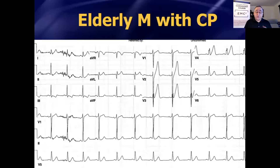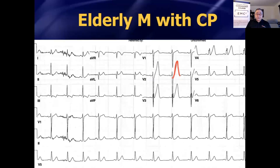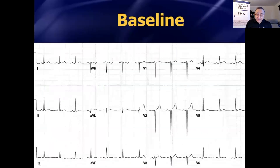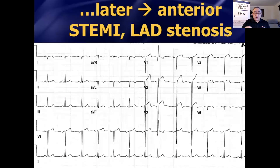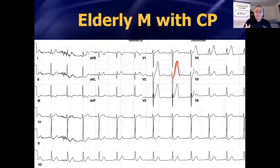This is an EKG I showed you earlier in the day — another example of the de Winter T wave pattern. Take a look at V2. You see there's the J point right there, where the S wave changes direction. There's ST depression shooting into a big, tall, symmetric T wave in the mid-precordial leads. You might recall about 45 minutes later, this patient ended up turning into an anterior STEMI. This turned into an anterior wall STEMI — we got the repeated EKG about 45 minutes later.